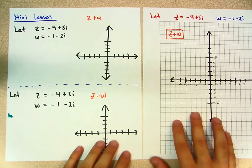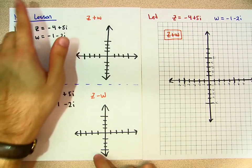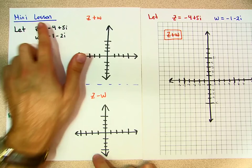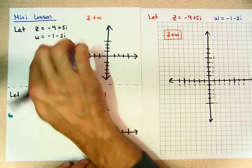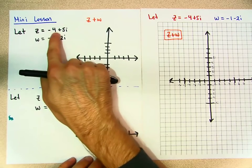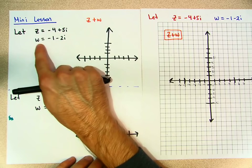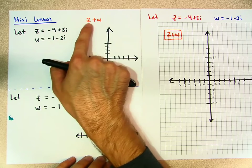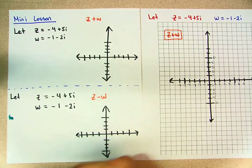Good morning everybody. Alright, so part two — this is the actual lesson for today. Let's do this. So if I were to say z is equal to negative 4 plus 5i, w is equal to negative 1 minus 2i, what is z plus w?